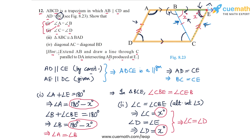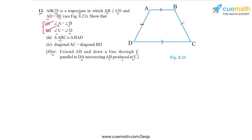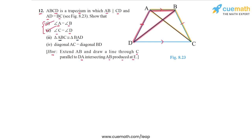We have proven two of the four parts. Now let's go to part three, where we have to prove that triangle ABC is congruent to triangle BAD. Triangle ABC is formed by joining diagonal AC, giving a triangle on the right side. Triangle BAD is formed by joining diagonal BD. Let's compare these two triangles, observing the order of the vertices carefully.